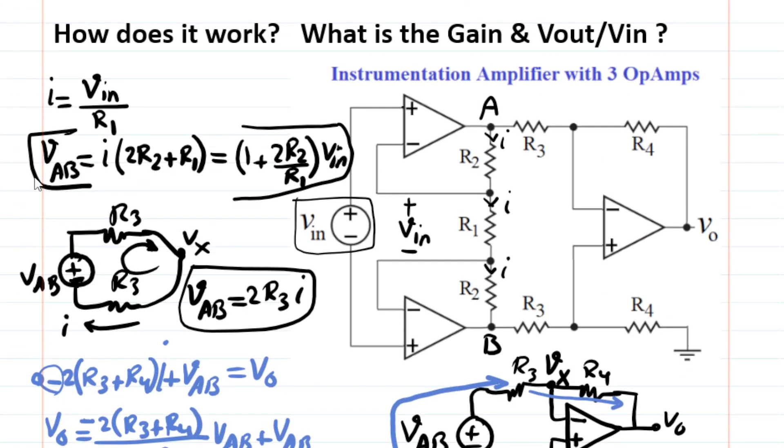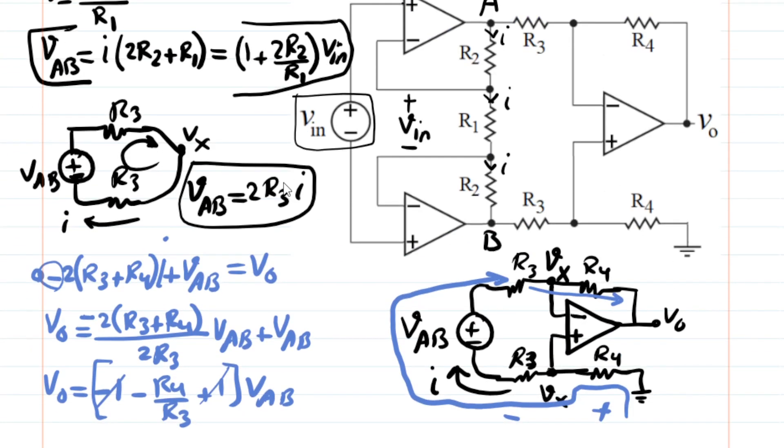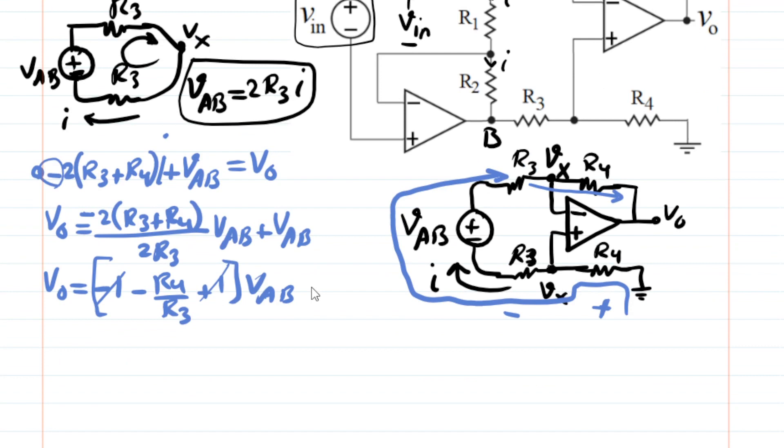You remember that at the beginning, we found that VAB is a function of Vin, a simple equation like this. So let's actually substitute VAB using this equation we have. So I'm going to substitute and I'm going to write. So remember, VAB is 1 plus 2R2 divided by R1 Vin. So as a result, 1 plus 2R2 divided by R1 times Vin. That's the substitution for VAB.